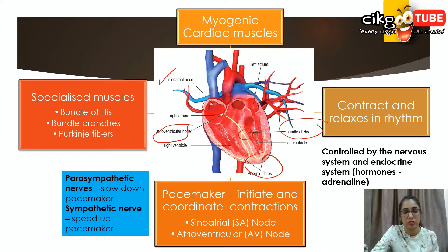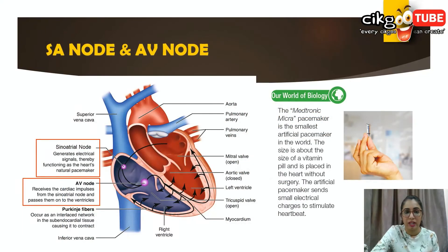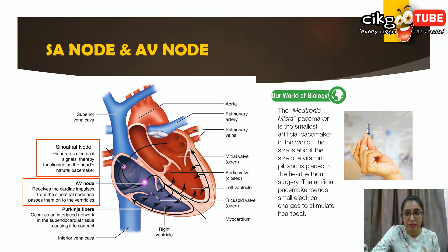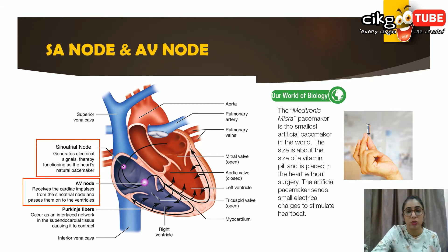The contraction of the heart is initiated and coordinated by the pacemaker. The pacemaker is located in the wall of the right atrium, as you can see in the picture. It generates electrical impulses which spread rapidly over the walls of both atria, causing the atria to contract rhythmically.